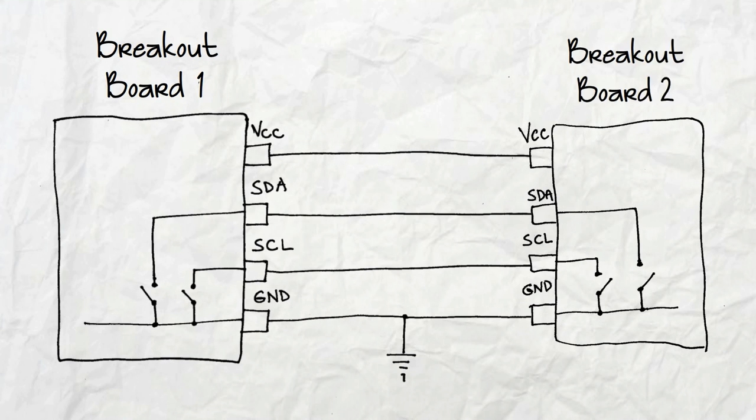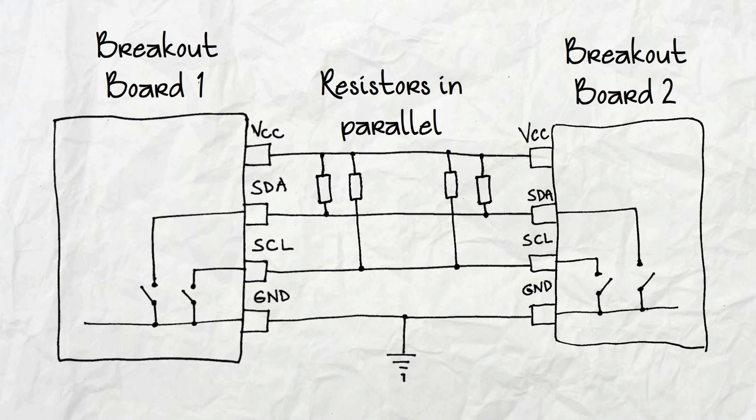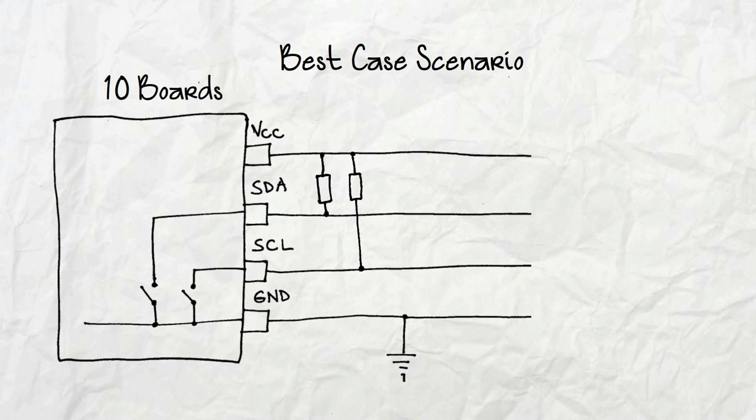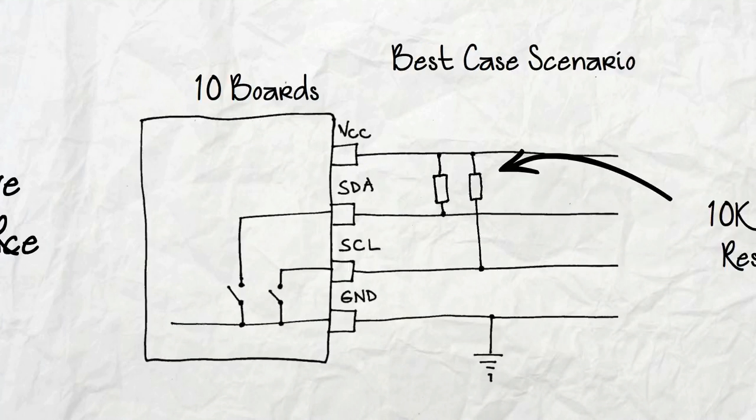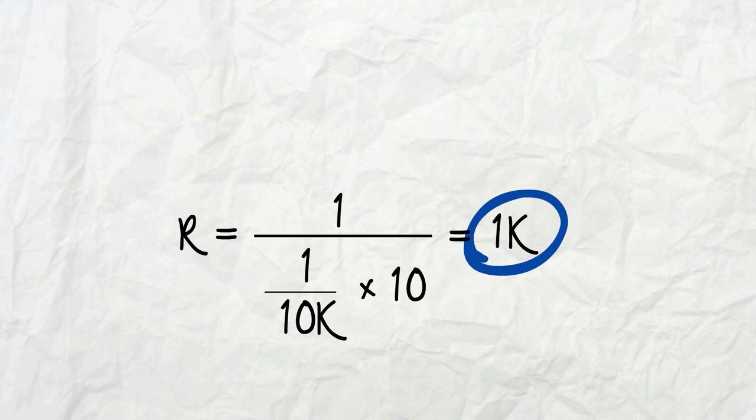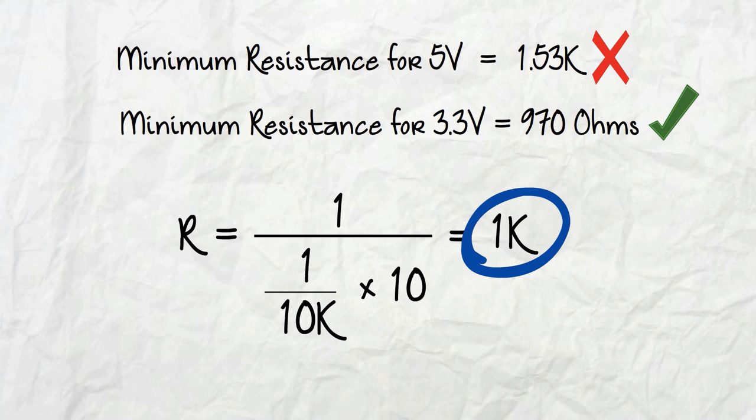Now, when you connect multiple breakout boards together, you're effectively connecting those resistors in parallel to each other. So, in a best-case scenario, with 10 boards, each with 10K resistors, you'll get an effective resistance of 1K, which would be fine for 3.3 volt devices.